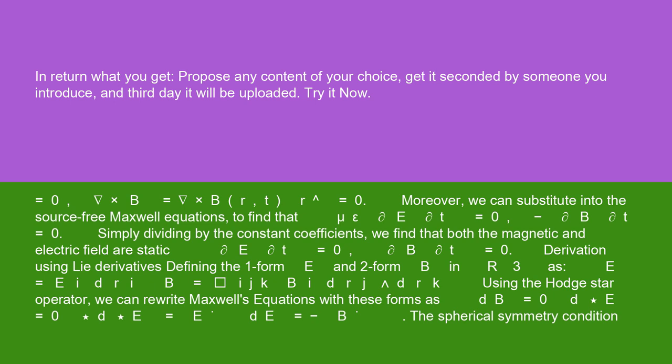Moreover, we can substitute into the source-free Maxwell equations to find that mu epsilon del E del t equals zero and del B del t equals zero. Simply dividing by the constant coefficients, we find that both the magnetic and electric field are static: del E del t equals zero, del B del t equals zero.